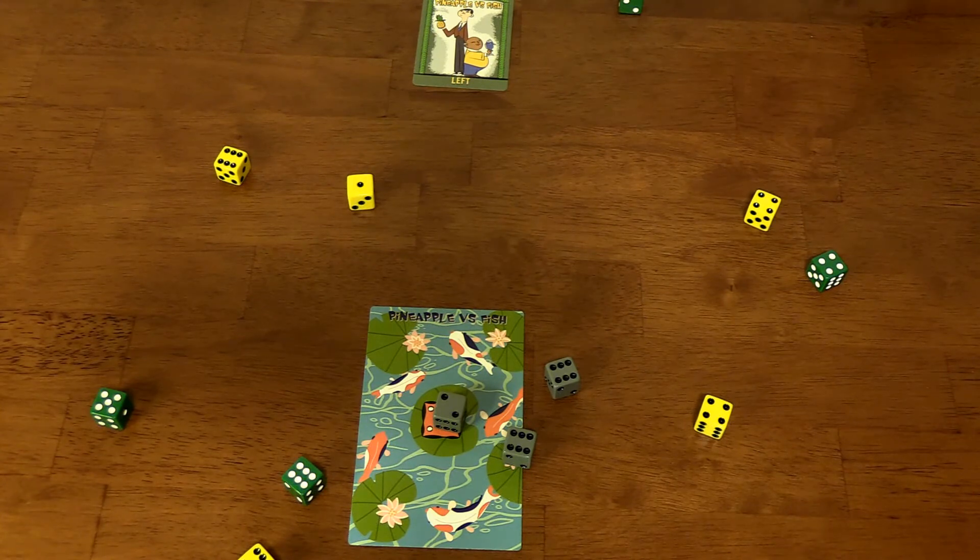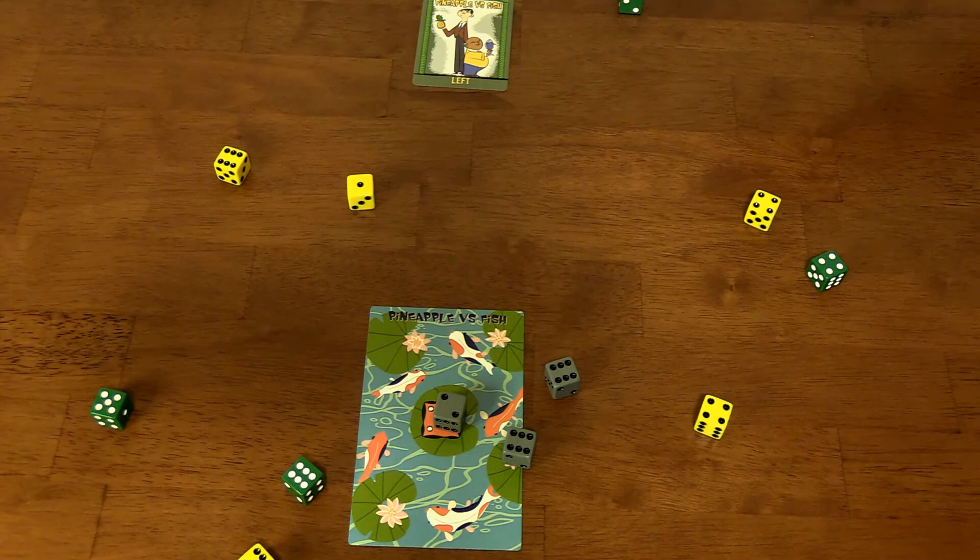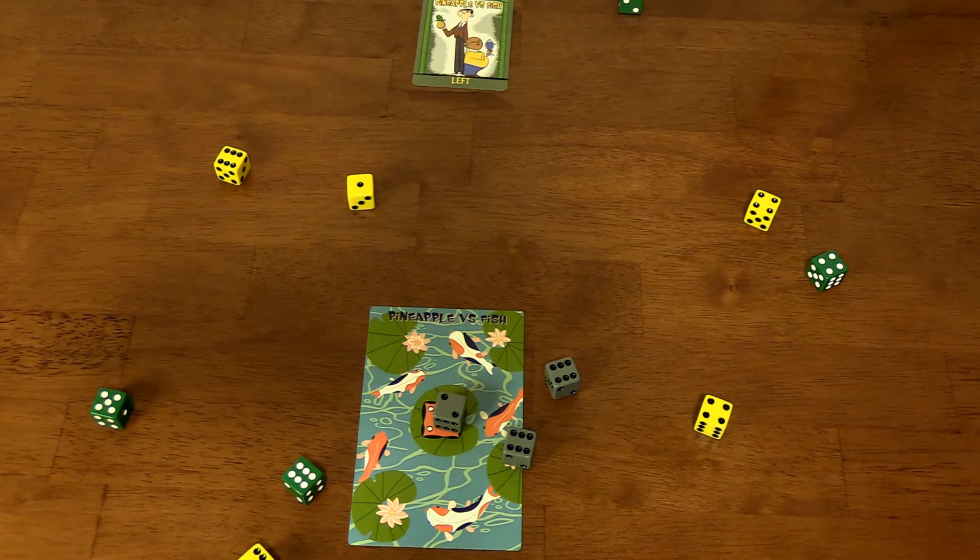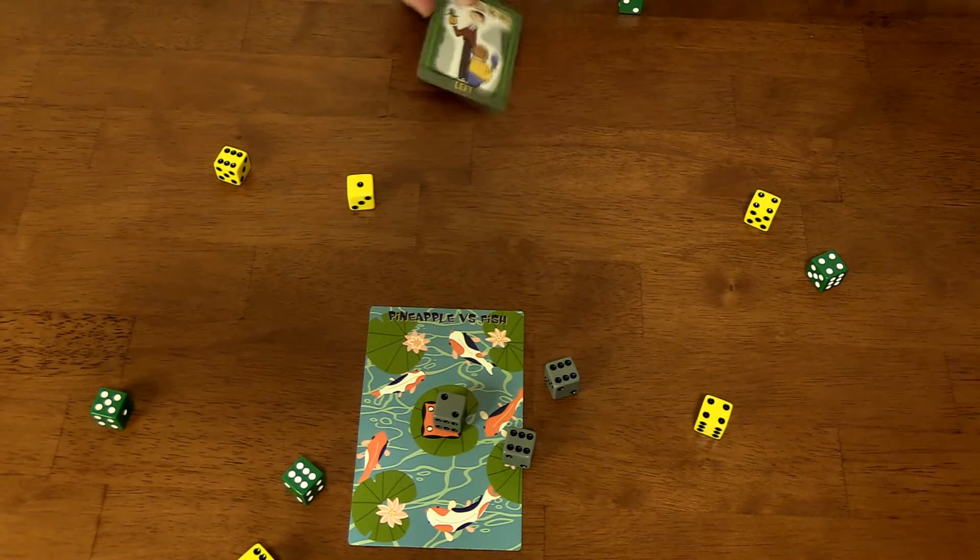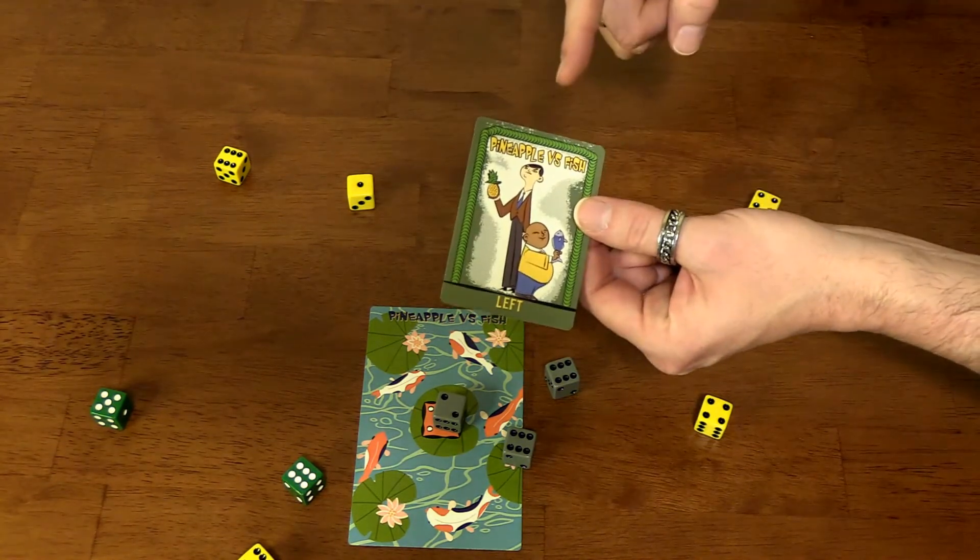So that was on his last dice. I only had one left. That's 11 dice that were in that tower - that's 1100 points for me in the duel. Well played though, right till the end. That is Pineapple versus Fish.